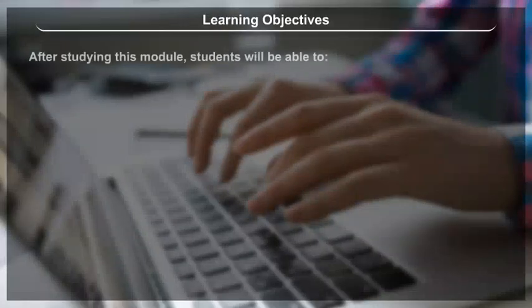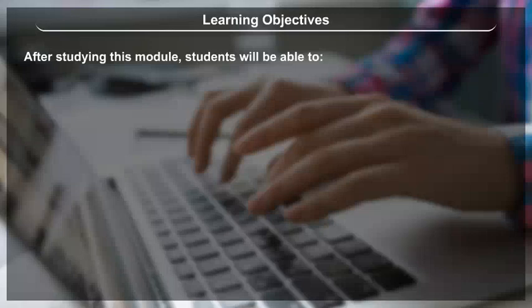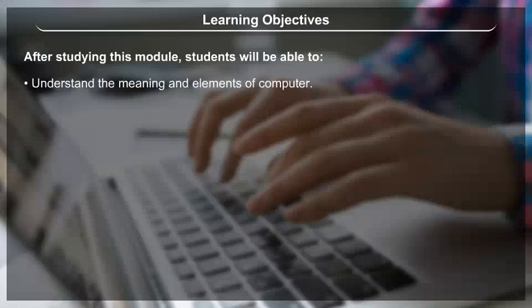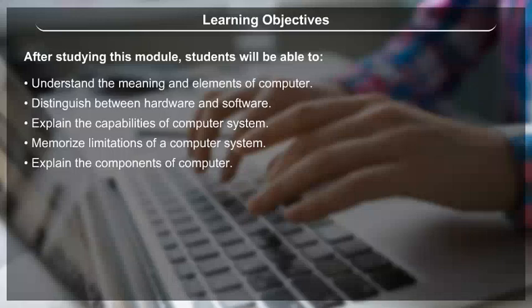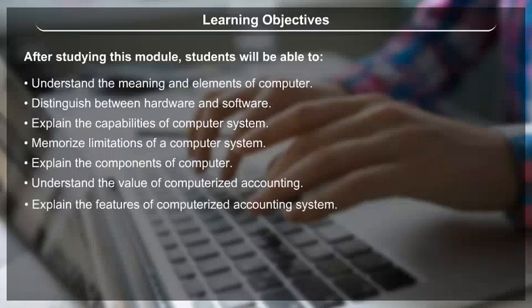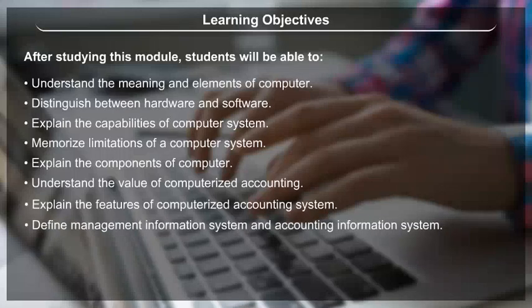Learning Objectives: After studying this module, students will be able to understand the meaning and elements of a computer system, distinguish between hardware and software, explain the capabilities and limitations of a computer system, explain the components of a computer, understand the value of computerized accounting, explain the features of a computerized accounting system, define Management Information System and Accounting Information System, and design comprehensive accounting reports.